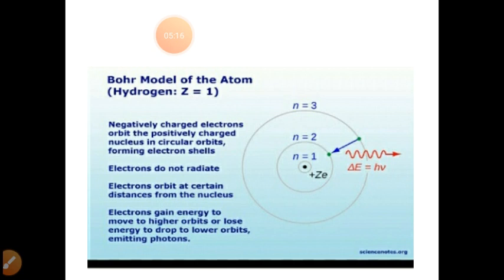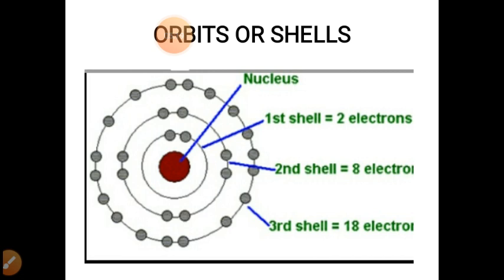These slides show the orbits or the shells where you can see the nucleus is shown, first shell, second shell and third shell containing the electrons. Number of electrons in the first shell is 2, second shell 8 electrons and third shell 18 electrons.